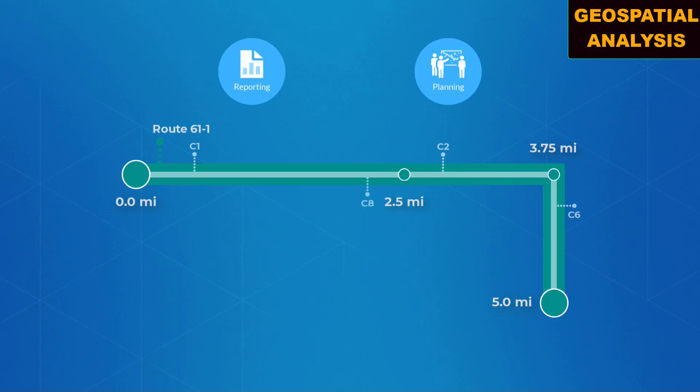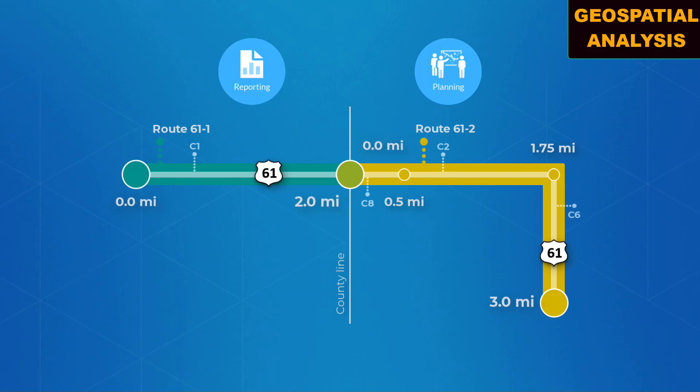Other internal groups, like planning and reporting, may benefit from using an LRM that depicts routes subdivided by county. In this example, a road that intersects two counties is represented by two different routes in the network, with the routes start and end measures reset at county boundaries.